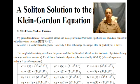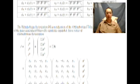My preon foundation for the fermions and mass-generalized Maxwell's equations hint at and are consistent with this soliton solution. Mass is not generally considered as a four vector, but considering it as such is consistent with the mass-generalized Maxwell's equations and this solution.